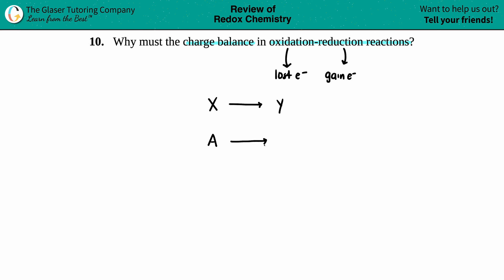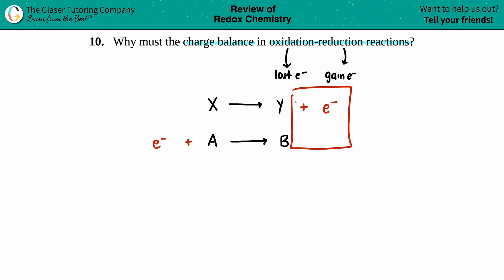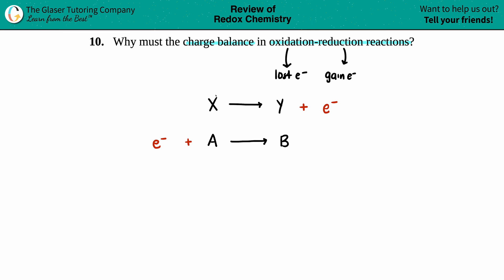So if you have 'X yields Y' and another reaction 'A plus B,' these are your two half-reactions. What matters is that one is going to have electrons on the left-hand side and one is going to have electrons on the right-hand side. If electrons are on both the same side, it is not an oxidation-reduction reaction. Electrons on the right side always indicates the oxidation part — those are the electrons being lost.